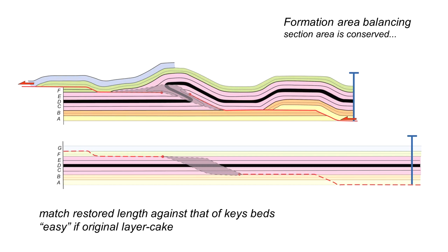Now this is relatively straightforward if the stratigraphy was originally layer cake. In other words we can independently establish what the undeformed thickness of layer E and C might have been. If not we have to trade off variations in the pre-existing stratigraphic thickness with the strain and the restored length. This is more complicated but it's still very tractable.